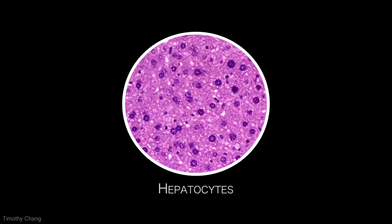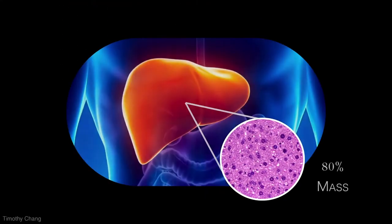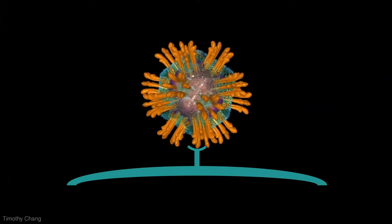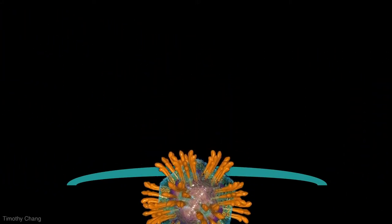HCV attacks hepatocytes, which make up around 80% of the liver's mass. To do this, HCV binds to cellular receptor complexes and triggers receptor-mediated endocytosis.